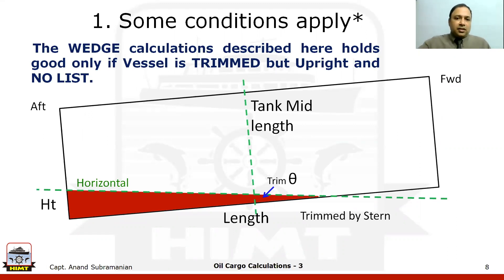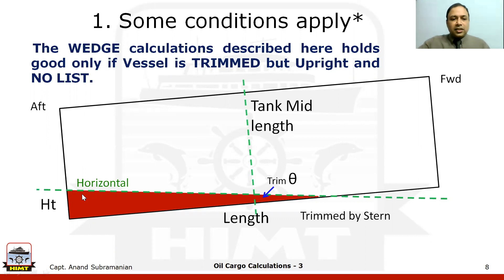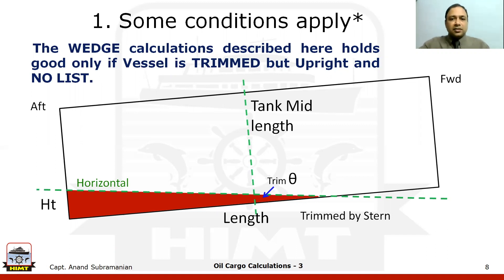This is because only when the vessel is trimmed with zero list will the surface of the wedge form a regular shape. If the vessel was trimmed and listed, the shape of this wedge formed at the bottom will not be a regular shape — it will be something like a tetrahedron or a pyramidal shape. Finding the volume of a pyramidal shape in the limited time given at the examination is not possible, and that is why we don't go into those calculations. So the requirement for our calculations in the examination is that the vessel is only trimmed, upright, and has zero list.